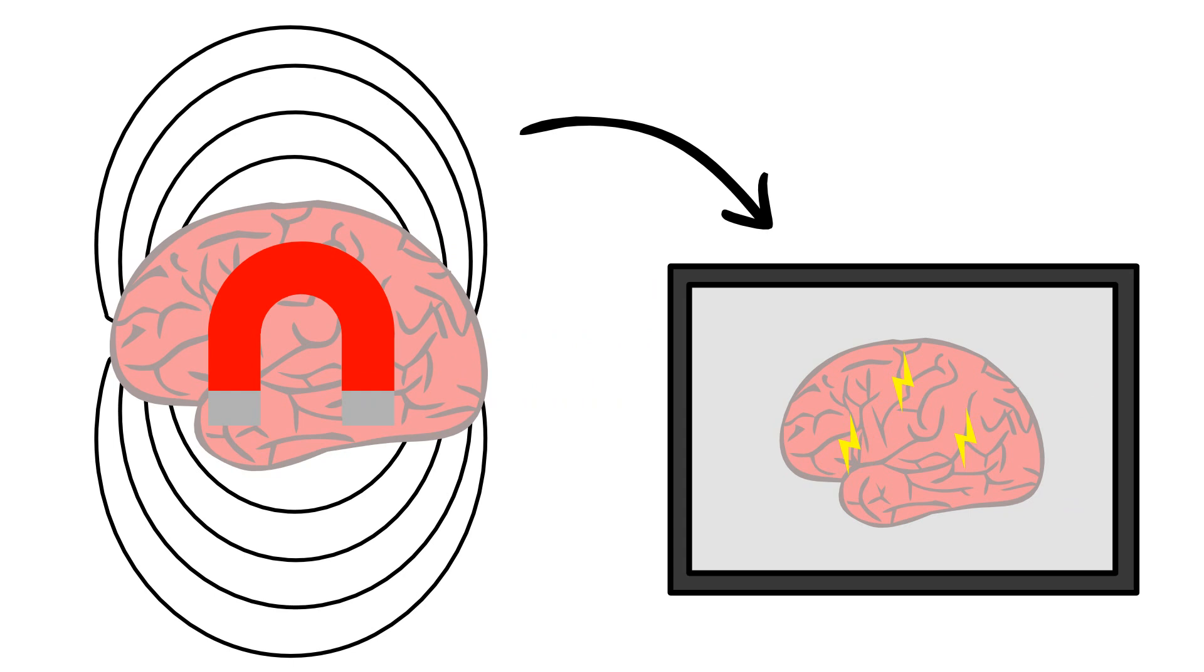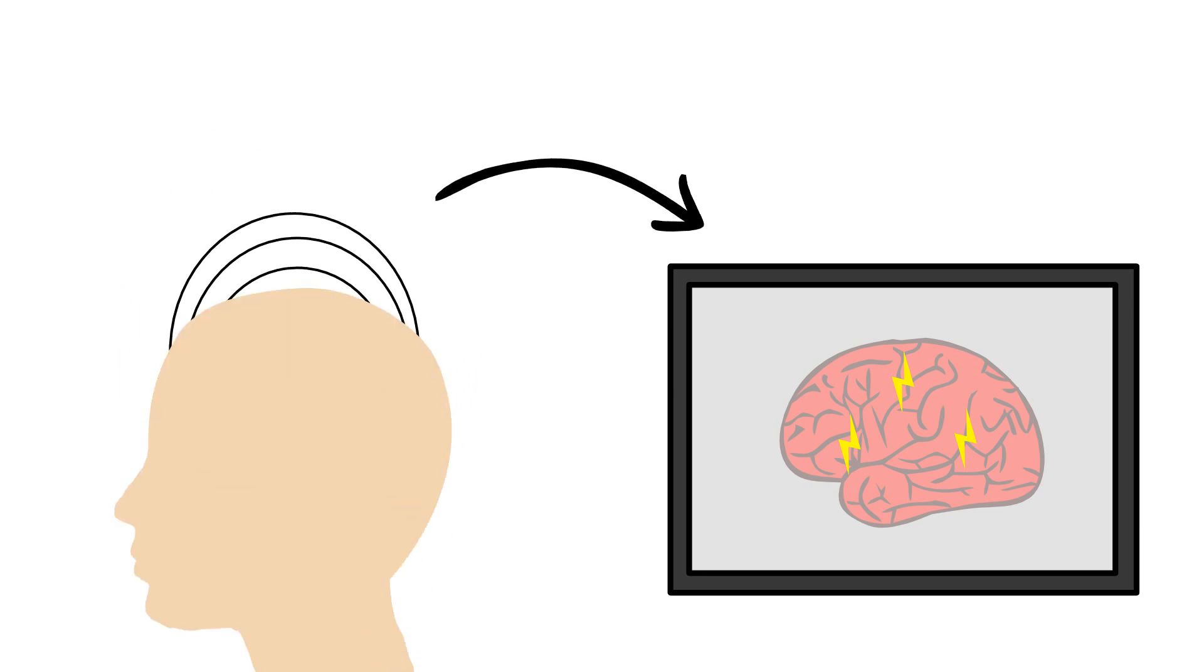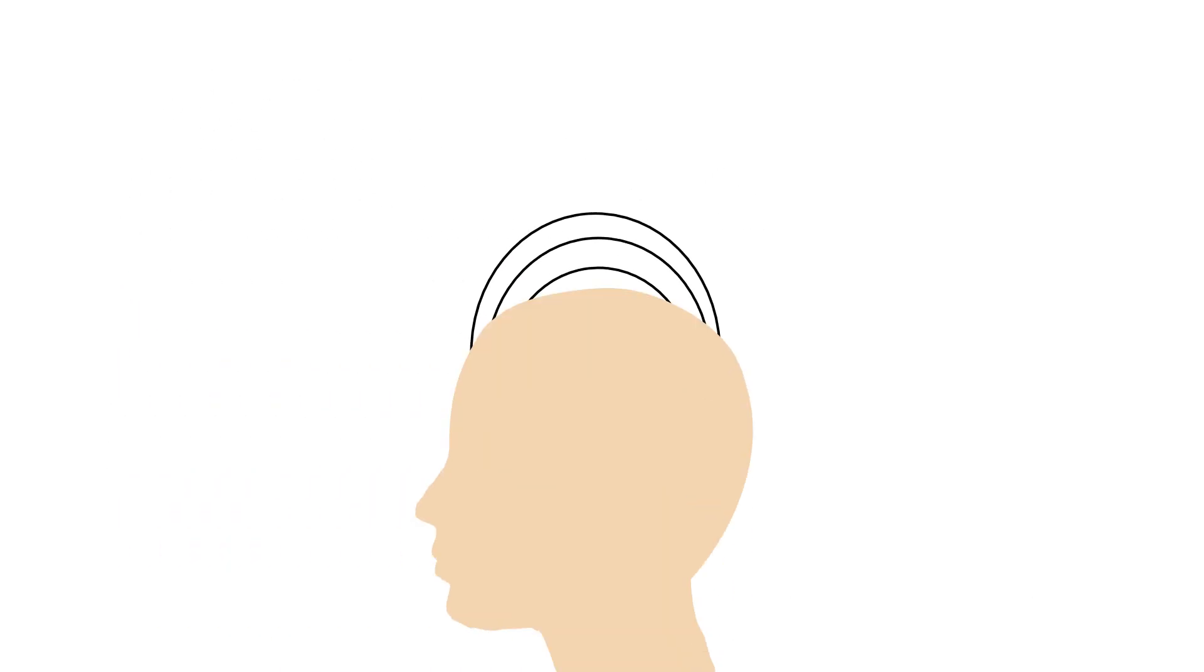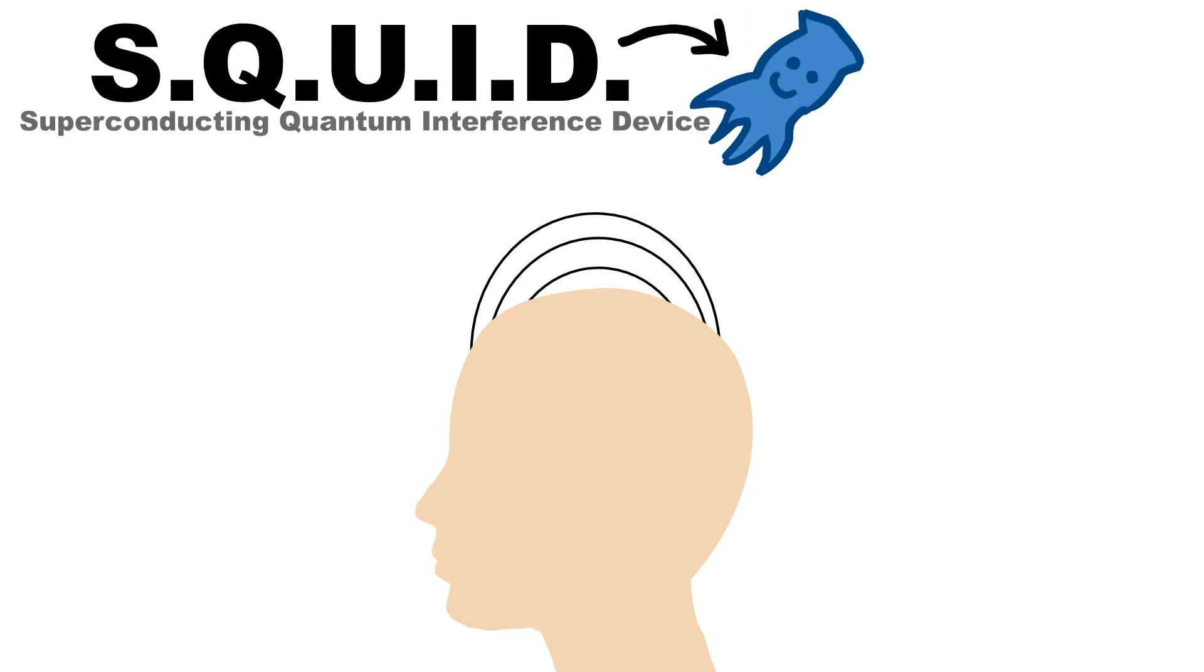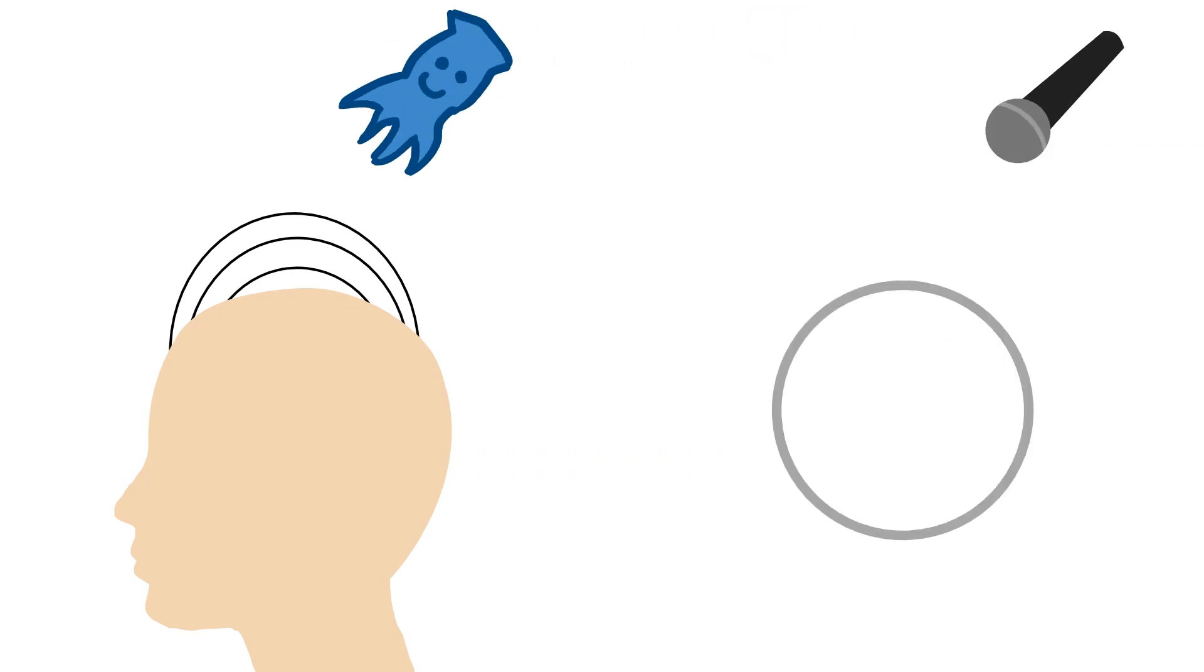With magnetoencephalography, we can see the brain working as it is working inside someone's head. The magnetic fields caused by brain activity are tiny and faint, so we measure them with highly sensitive magnetism detectors called squids, just like you'd use a highly sensitive microphone to measure a very quiet sound.